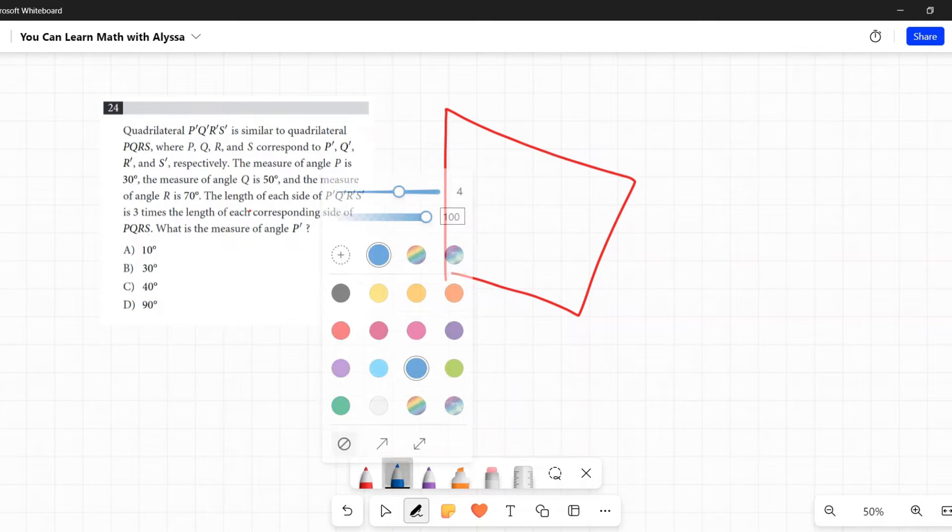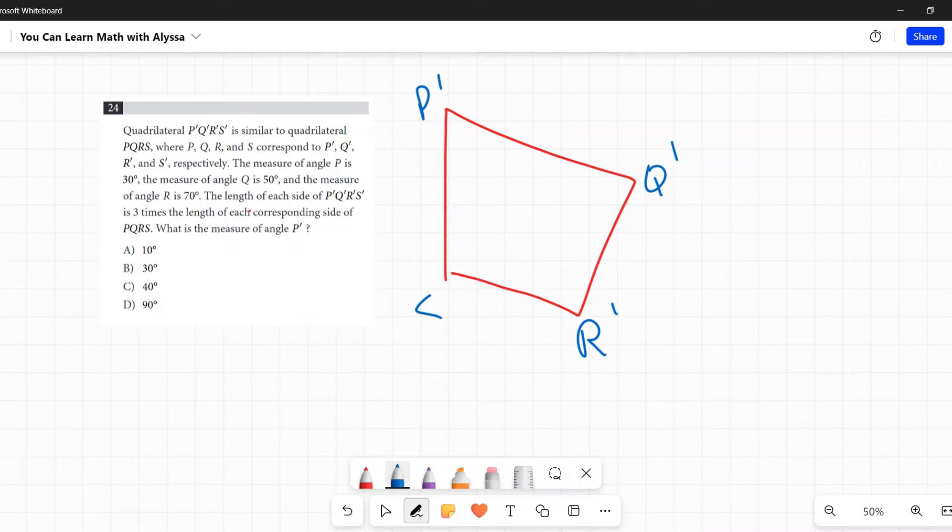So I am going to label this as my prime one P prime Q prime R prime S prime, it's hard to say, and then it's similar to another quadrilateral so I'm going to try to draw like a little, I'm going to guess smaller, I don't know yet, smaller version scaled up or down. In this case I'm guessing scaled down but I don't know yet because I haven't read the rest of the problem, that's PQRS.